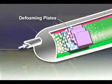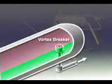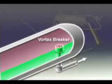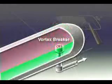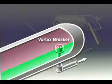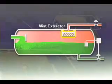Defoaming plates reduce foaming at the gas-liquid interface, which tends to occur when gas bubbles are liberated from the liquid. A vortex breaker keeps vortexes from developing when the liquid control valve is open, thus preventing gas from being drawn out of the vapor space and re-entrained in the liquid outlet. Mist extractors coalesce and collect small liquid drops from separated gas before the gas leaves the vessel.